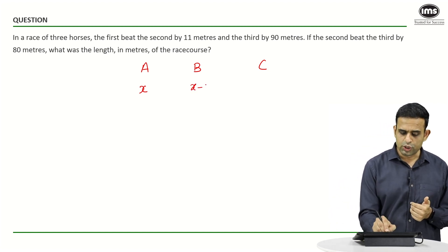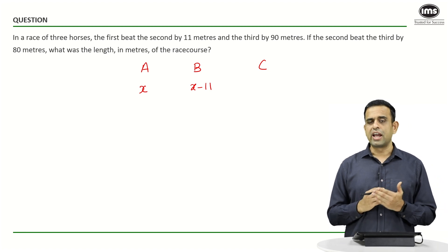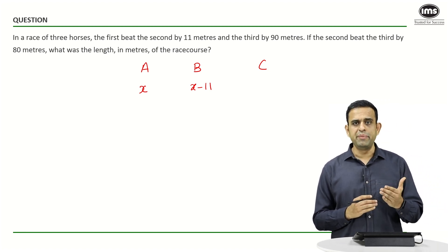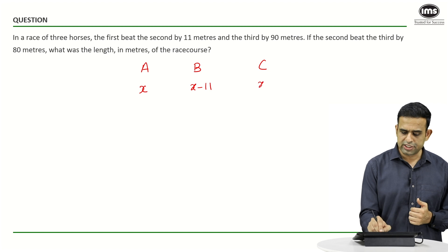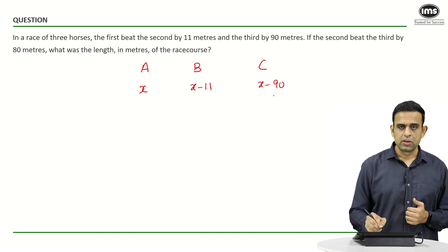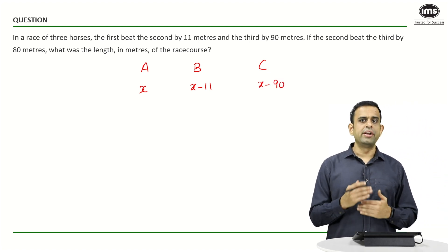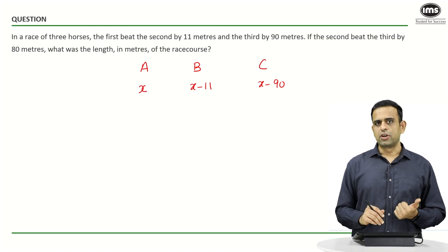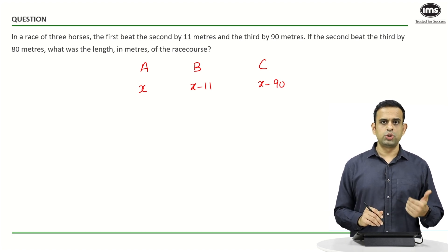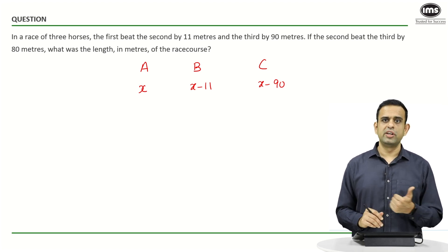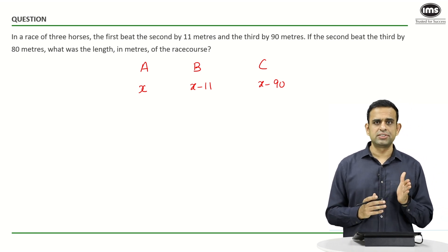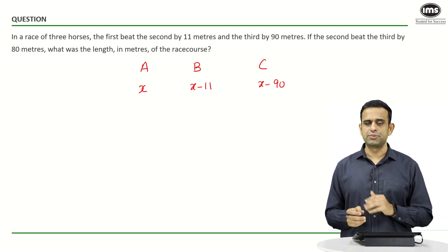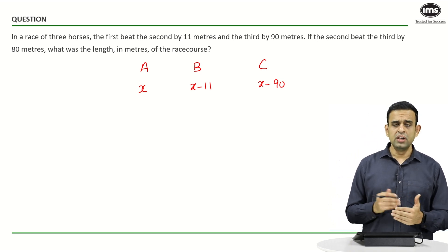In the same time, B has covered a distance of X minus 11, and C was 90 meters behind the finishing line, so C covered X minus 90. Since the time taken is constant, the ratio of the distance implies ratio of their speed. The speed ratio of A, B, and C should be X to X minus 11 to X minus 90.